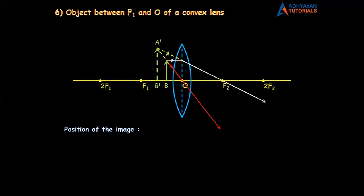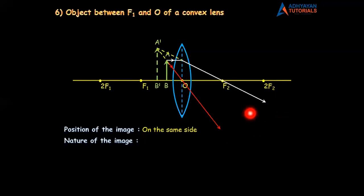The image should be on the same side as the object. So the position of the image is on the same side. Now let us discuss the nature of the image. Look at the diagram — are the rays actually meeting or are they appearing to meet? They are not actually meeting here; they are only appearing to meet. And that's why the image is virtual.